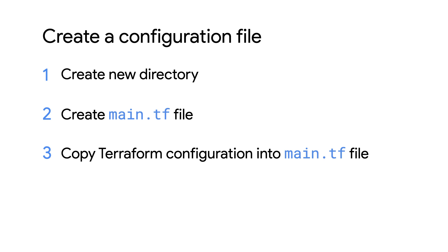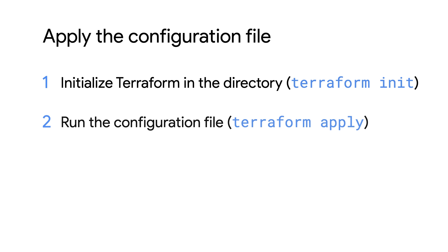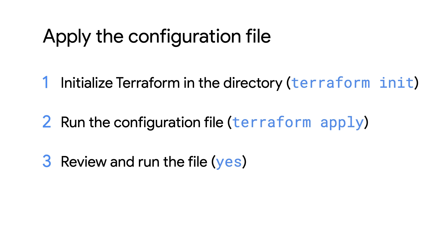There's documentation linked in the description that you can use to help you write the infrastructure you want. Then you'll apply the configuration file by first initializing Terraform in the directory you saved the infrastructure file in, running the configuration file with a Terraform apply command, and making sure the proposed changes look good and agreeing to run it with a yes command. Terraform will then execute this under the hood and you can view this later in Pantheon.